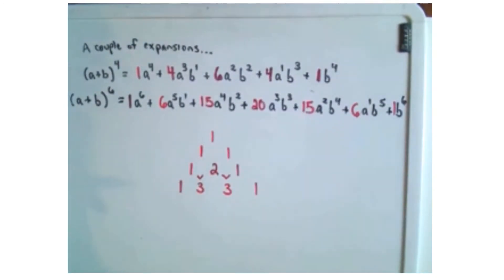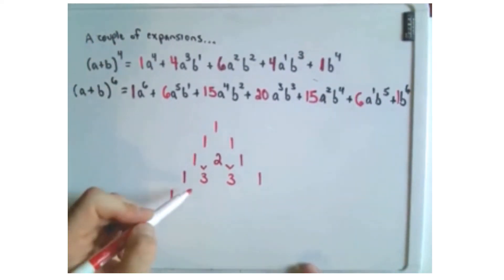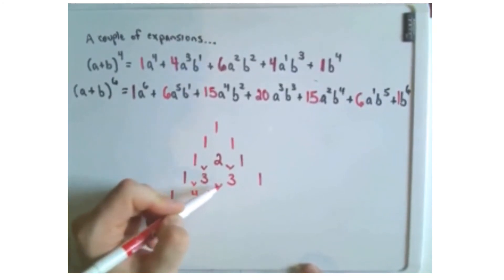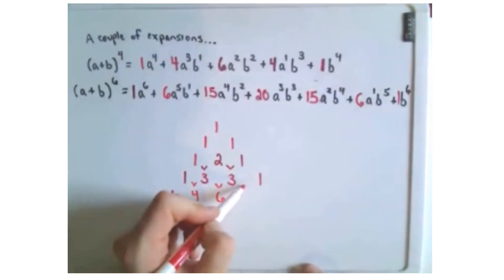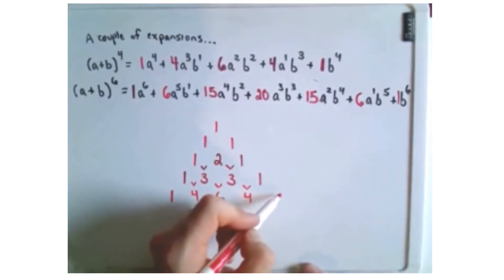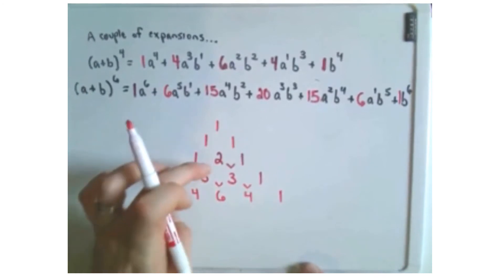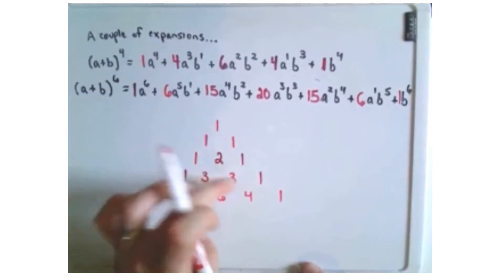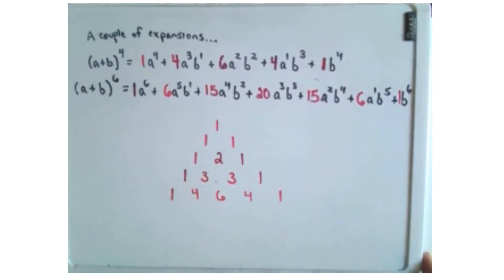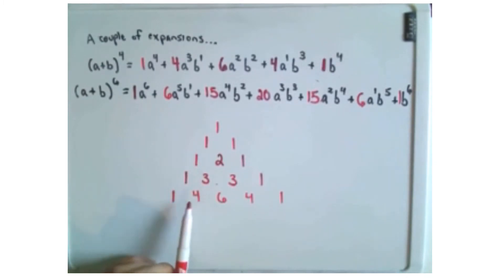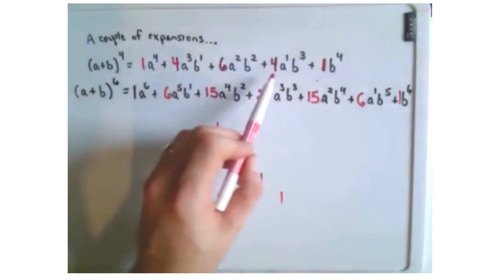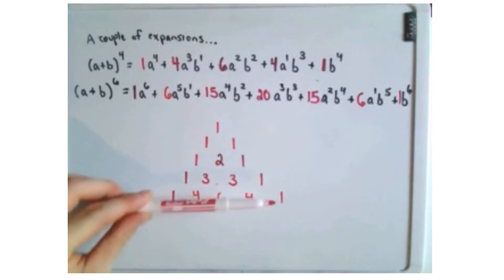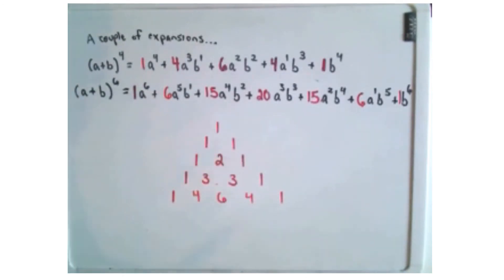Keep going with the process. Add 1 and 3 to get 4, add 3 and 3 to get 6, add 3 and 1 to get 4, and stick a 1 at the end. Look at those numbers: 1, 4, 6, 4, 1. And look at the coefficients from the expansion — also 1, 4, 6, 4, 1. Every row gives you the binomial coefficients.